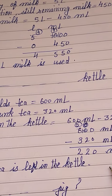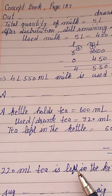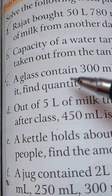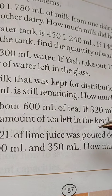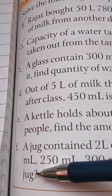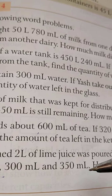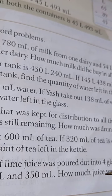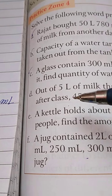After subtraction we are getting 280 millilitres. So 280 millilitres of tea is left in the kettle. In part F: a jug contains 2 litres of lime juice. It was poured out into 4 glasses of 200 millilitres, 250 millilitres, 300 millilitres, and 350 millilitres. How much juice is left in the jug?